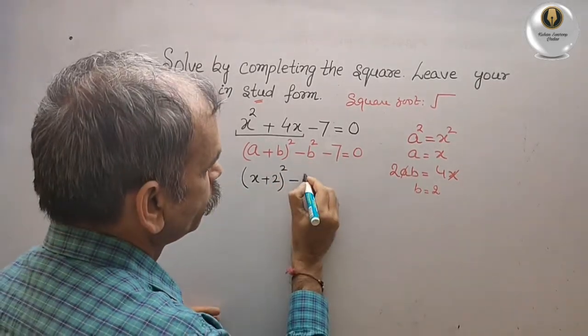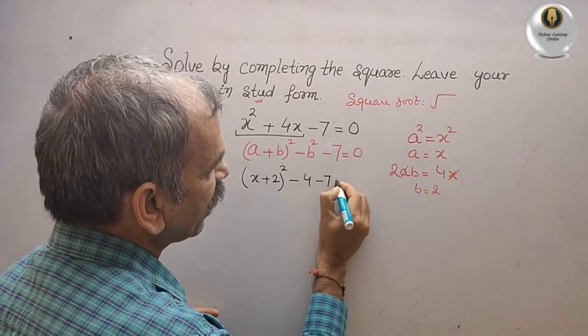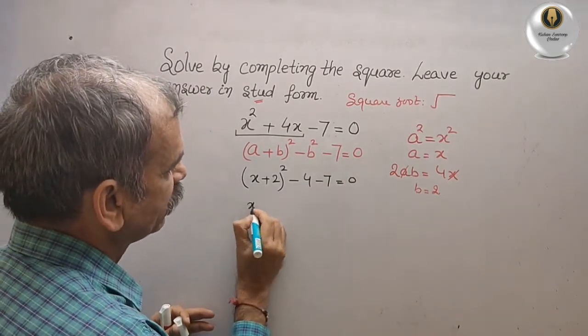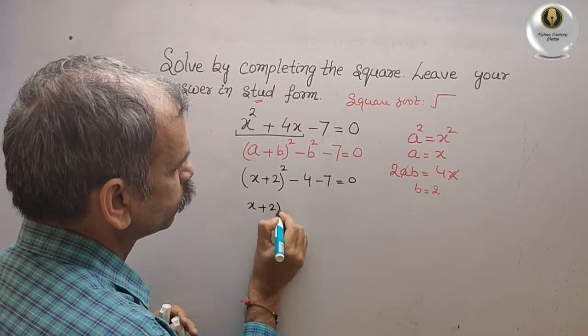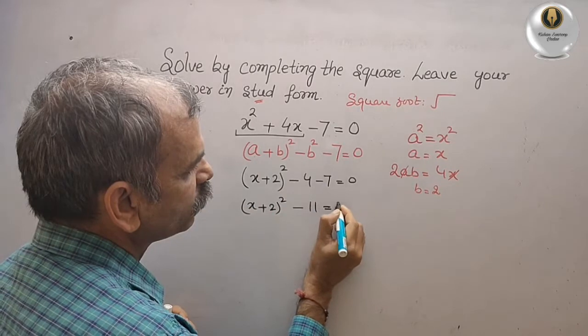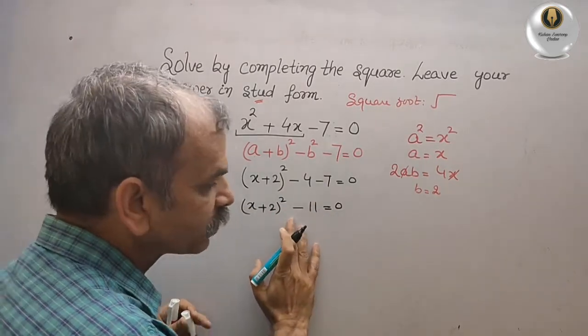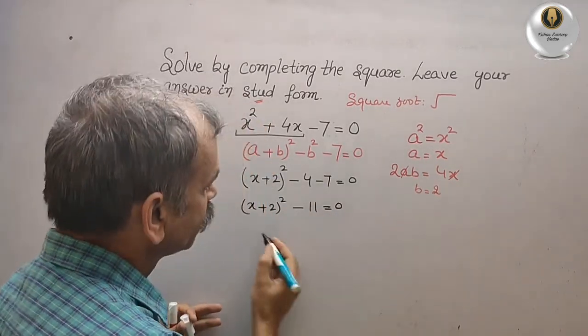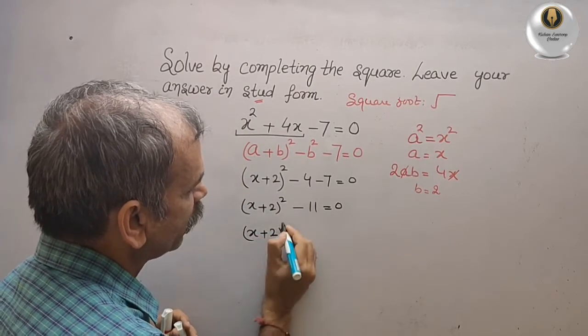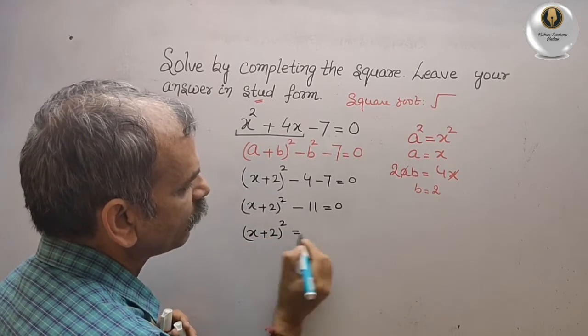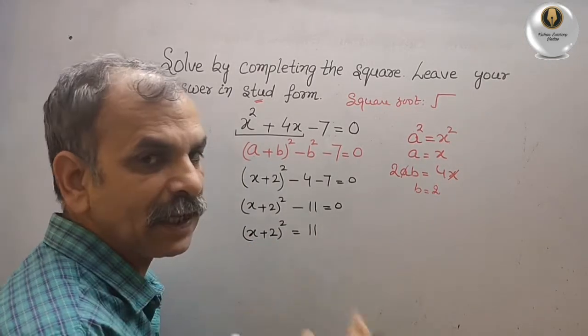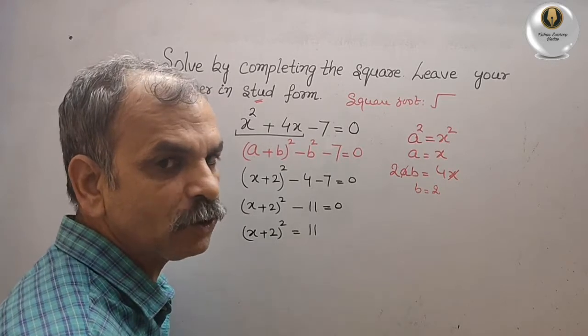Now you can see here you will get (x + 2)² - 11 = 0. Bring this 11 to this side, we will get (x + 2)² = 11. If (x + 2)² is 11, what is x + 2?